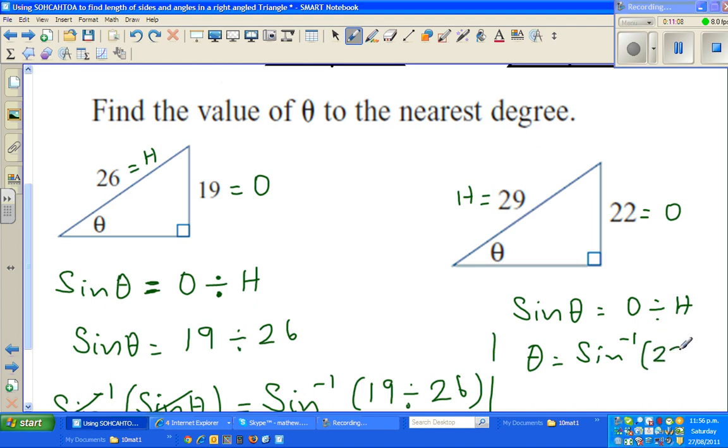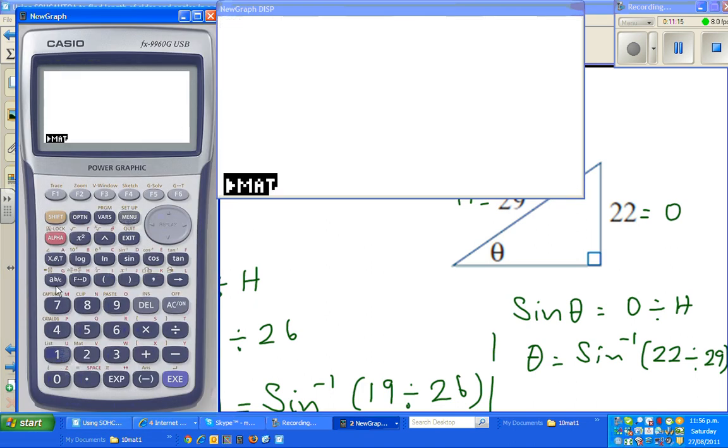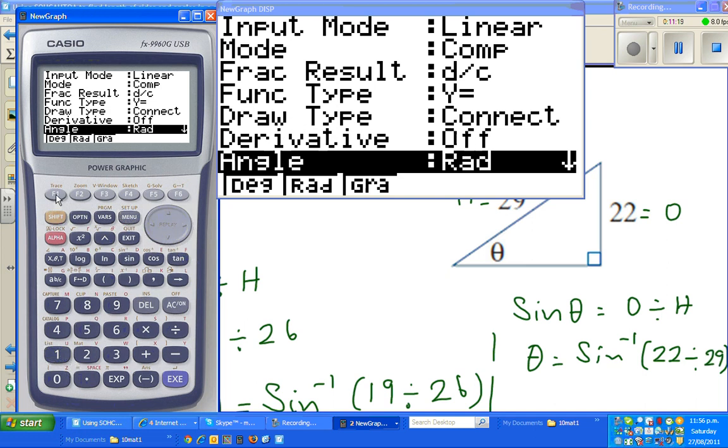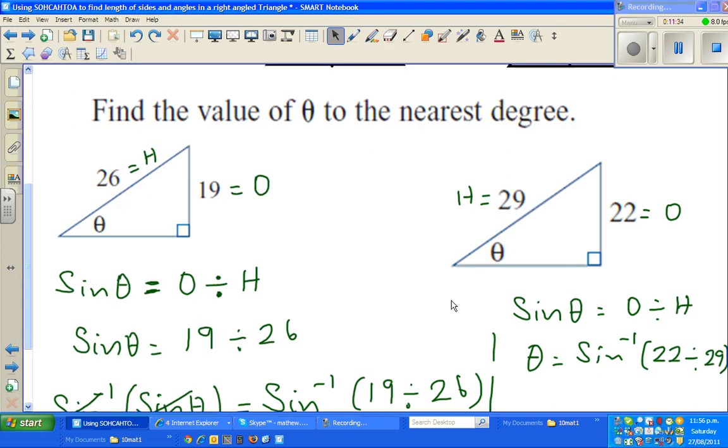So let me get my calculator out. So menu 1, sine inverse. So shift, sine, bracket, 22 divided by 29. Close the bracket. That is 49.3, so that's 49 degrees. So my answer is theta is 49 degrees.